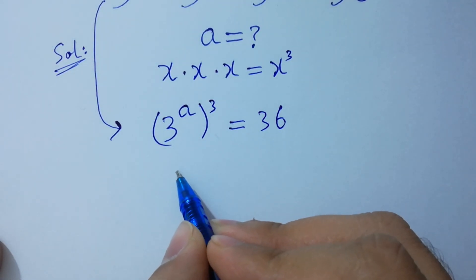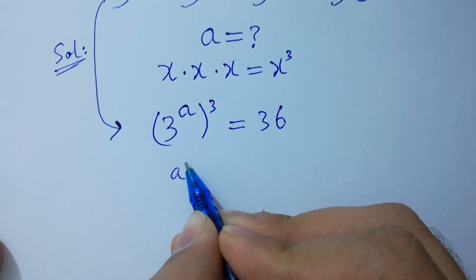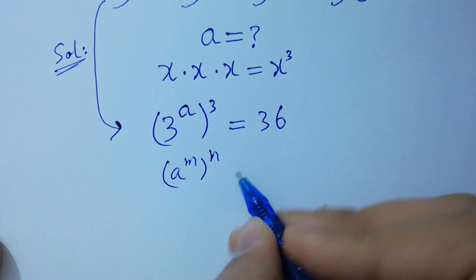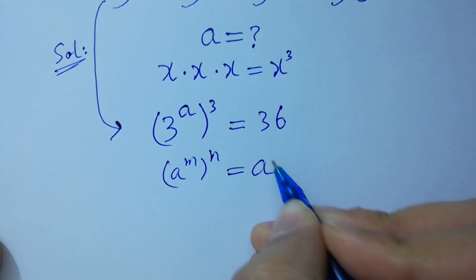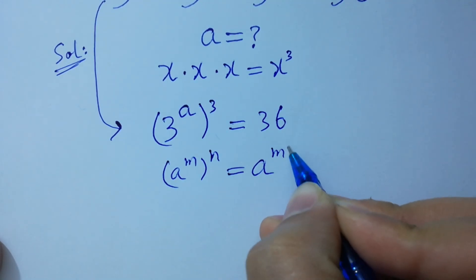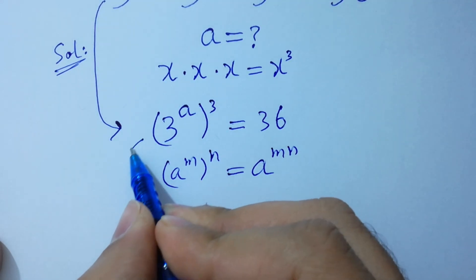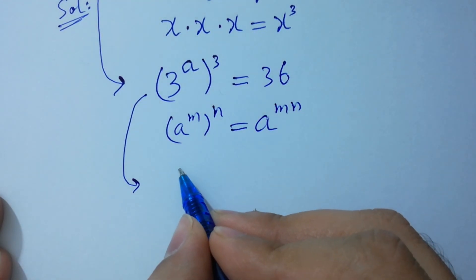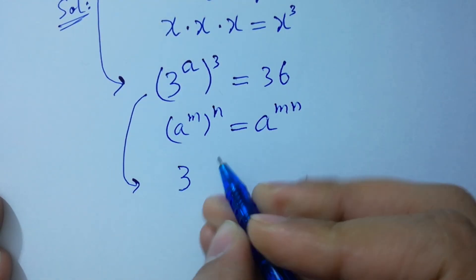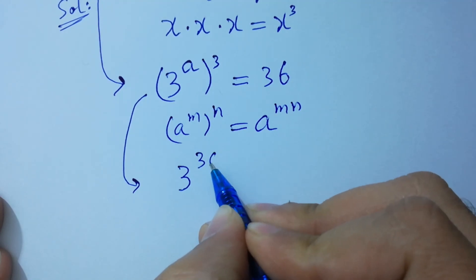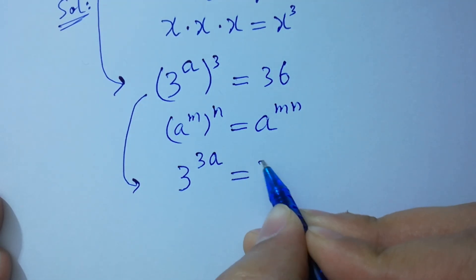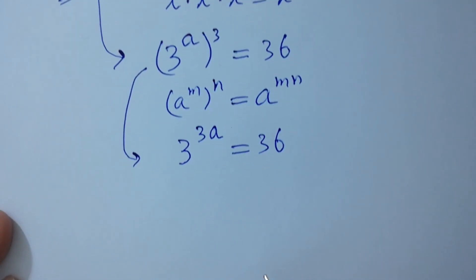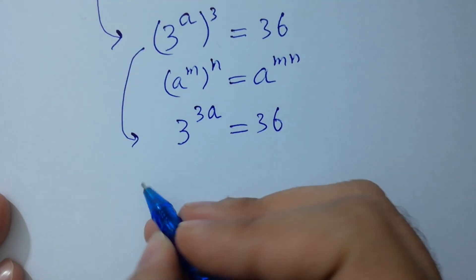As a to the power m, to the whole power n, equals a to the power mn, we have 3 to the power 3a equal to 36. Take log on both sides.